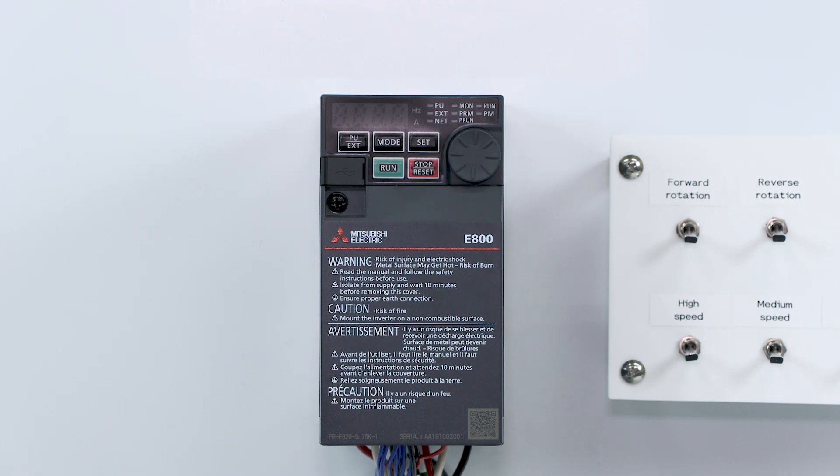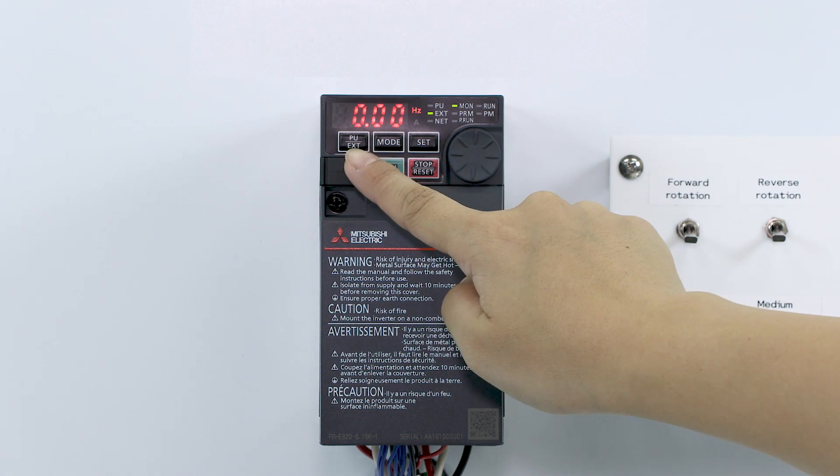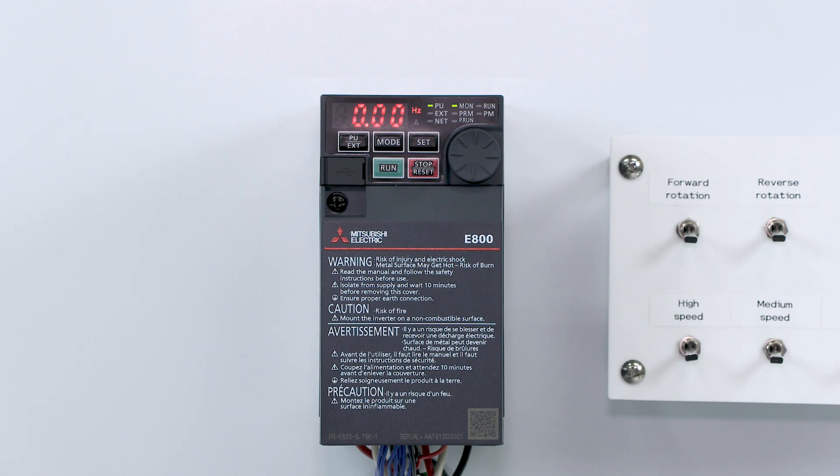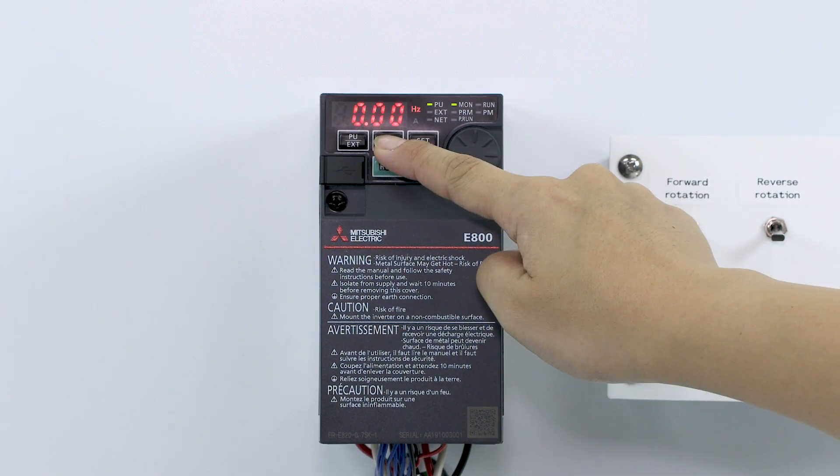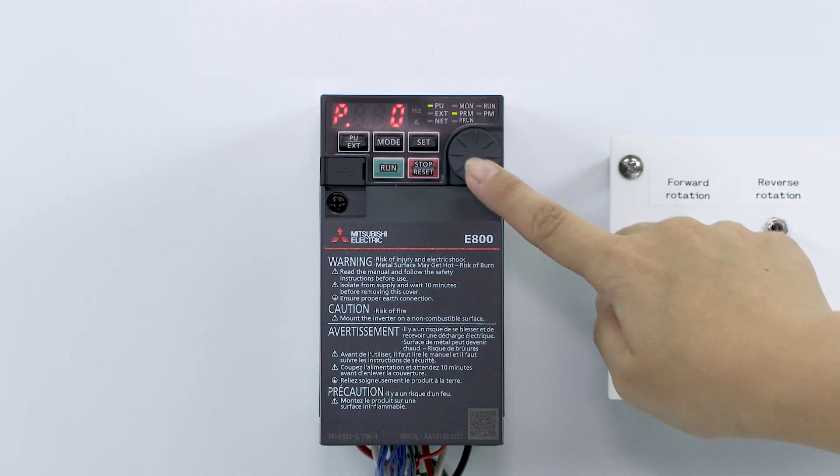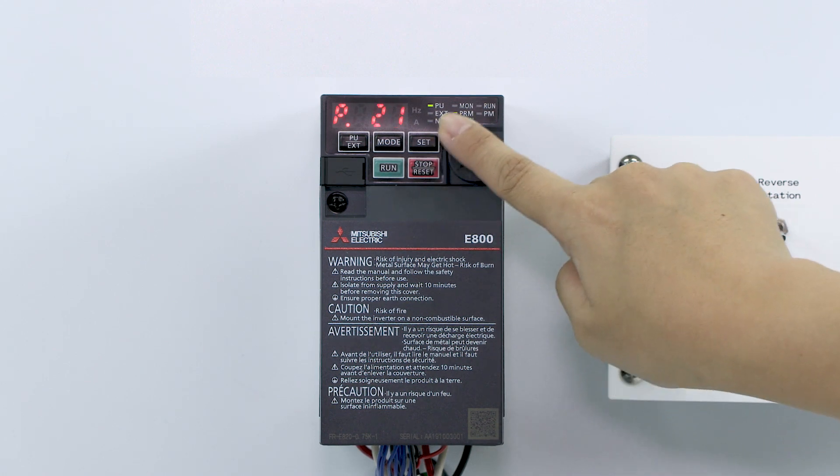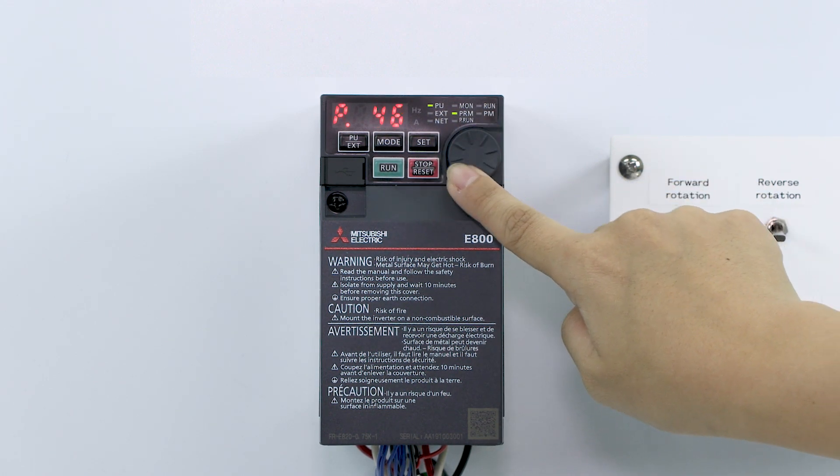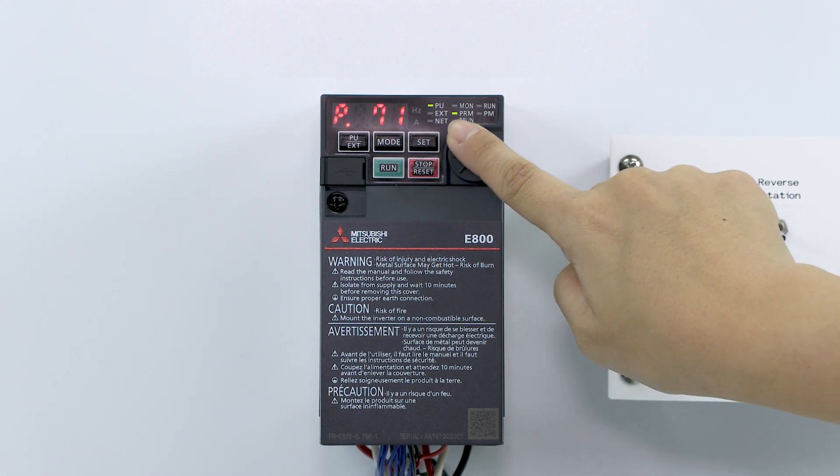The LED display illuminates when the inverter is turned on. First, set the operation mode. Press the PU EXT key to select the PU operation mode. To select PU operation mode, set parameter 79 to 1.